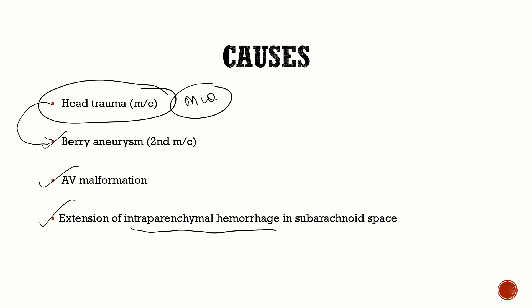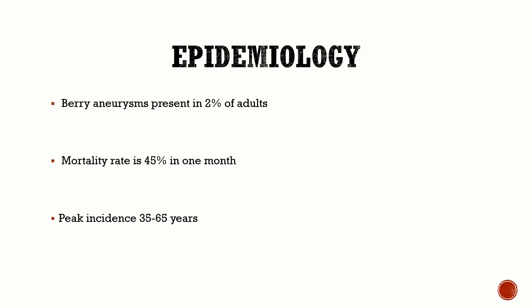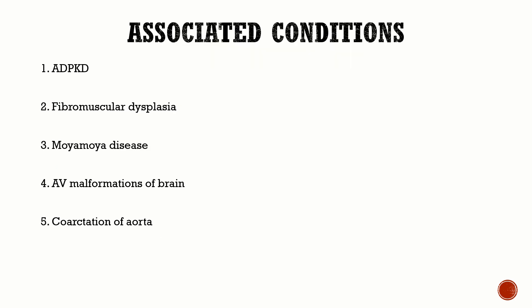Coming to the epidemiology of SAH: berry aneurysms are actually common — present in 2% of all adults. Subarachnoid hemorrhage has a high mortality rate of 45% at one month. Berry aneurysms don't commonly occur in the pediatric age group; they're commonly seen in adults with a peak incidence at 35 to 65 years of age.